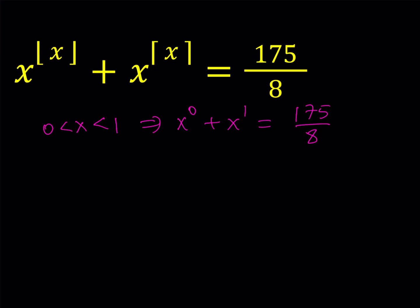Well, x to the power of zero means one. Correction. So it's going to be one plus x equals 175 over eight. And then you're going to subtract one from both sides. And that's going to give you 167 over eight, which is greater than 20. So x cannot be in this interval, contradiction. We don't have any solutions on this interval.